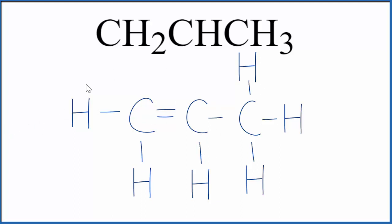So this would be the Lewis structure for CH2CHCH3. And if you count up all of the valence electrons: two, four, six, eight, 10, 12, 14, 16, 18, that's the same as the number of valence electrons we have for CH2CHCH3.